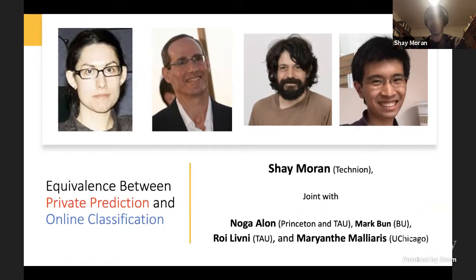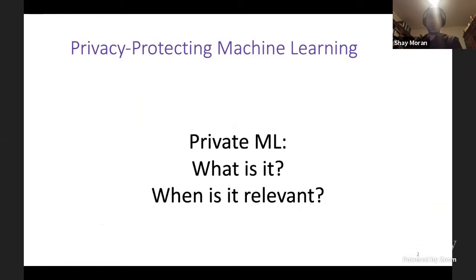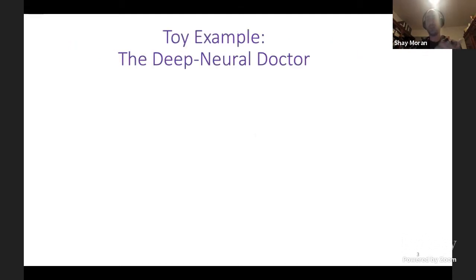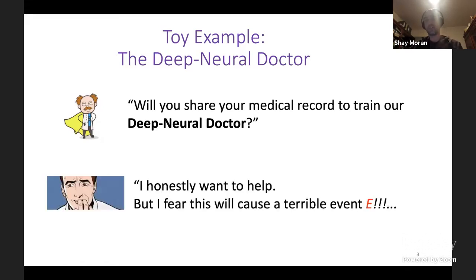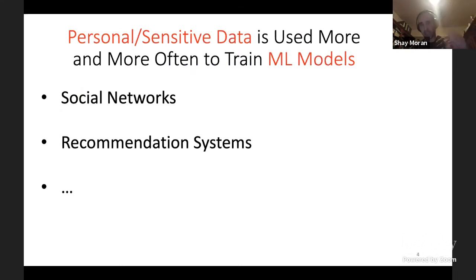This talk is about differentially private learning — private machine learning. One example we'll use throughout is: imagine you have a deep neural doctor, and your family doctor asks you to share your medical record to train it. Most people may want to help, but some may be afraid because it is personal and sensitive data whose exposure may cause bad events. This is a real-world issue of learning algorithms using personal and sensitive data.